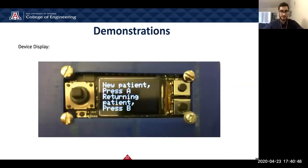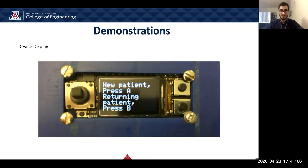Now I will show a demonstration. This is the device display. We have the LCD. On the left you can see the joystick. On the right we have two buttons. This is the main display when the device has been turned on. We have options for a new case and a new patient. We have two cases — the new patient and existing patient — and these will be associated with the buttons on the right.